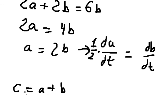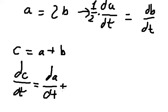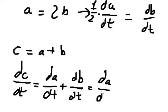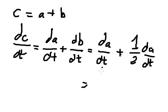If we take the first derivative of both sides of C equals a plus b, we have dC/dt equals da/dt plus db/dt, which equals da/dt plus 1/2 da/dt. We sum these terms together and get 3/2 da/dt.